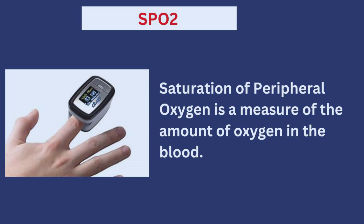You may also hear the term SpO2, which refers to saturation of peripheral oxygen. This is used to measure the amount of oxygen present in the blood, and it is usually expected to be between 95 to 100 percent.